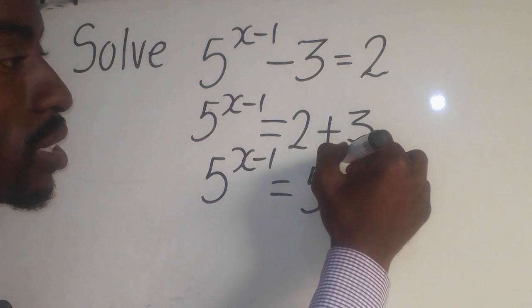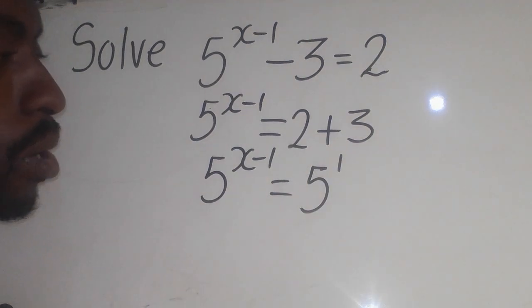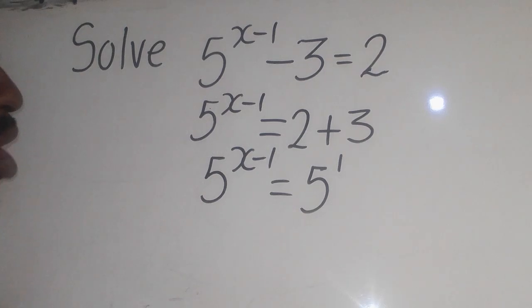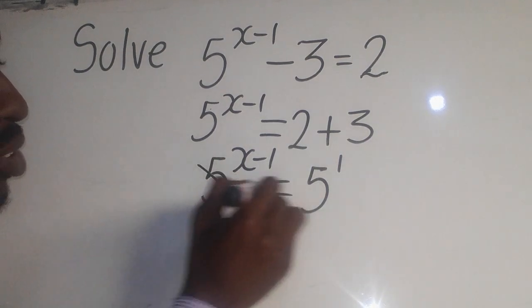Now we know that when there is no number here simply means there is what? It is 1 there, because any number to the power 1 is that number. Now as you can see we have the same base there, so we can cancel them out like this.